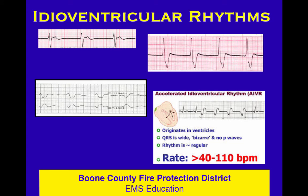Other ventricular rhythms include idioventricular rhythm — a ventricular escape rhythm. When the SA node doesn't fire and nothing in the junction fires, the backup to the backup finally gets to play: a wide, slow ventricular escape rhythm. If that gets accelerated, the rate moves up to 40 to 110 — that's accelerated idioventricular rhythm. You might say it could be junctional with a bundle branch block, and you're right. The general rule: wide and slow with no P waves — say idioventricular; narrow and slow with no P waves — say junctional, and you'll be right more than wrong.